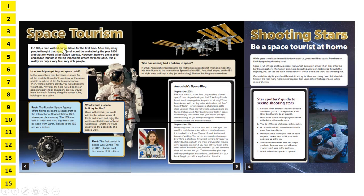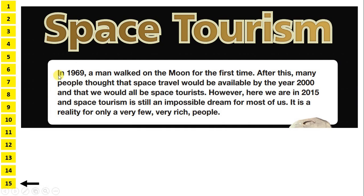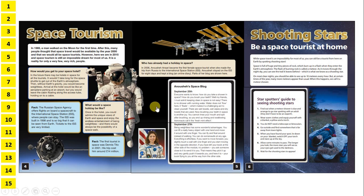What I like to do first is open the reading booklet and spend about a minute scanning the first text. If there's an introduction, we can read that. The introduction reads: In 1969, a man walked on the moon for the first time. After this, many people thought that space travel would be available by the year 2000 and that we would all be space tourists. However, here we are in 2015 and space tourism is still an impossible dream for most of us — it is a reality for only a very few, very rich people. Looking at the pictures, we can see astronauts and satellites, and two people looking up at the stars, so we can tell this is a non-chronological report with facts about space.